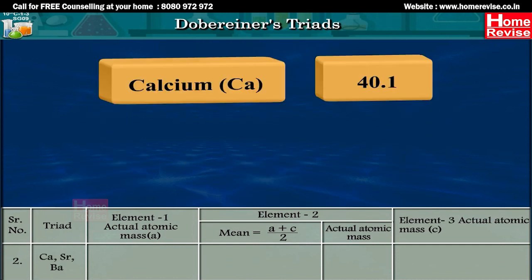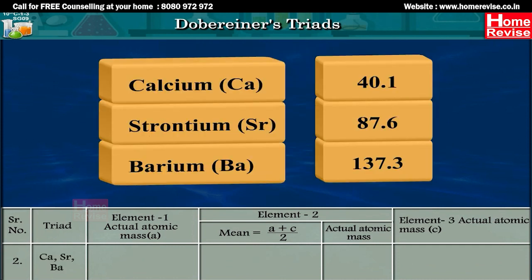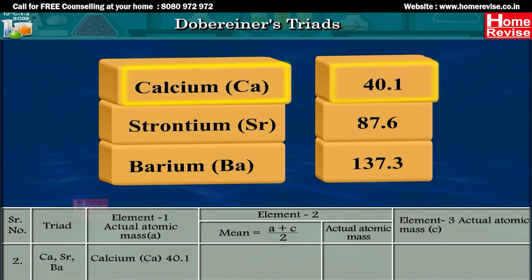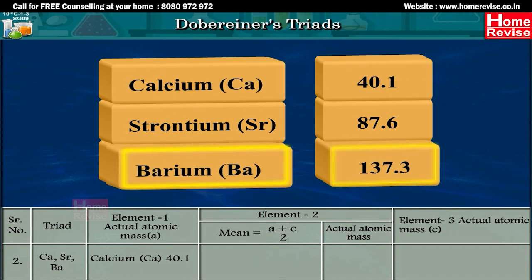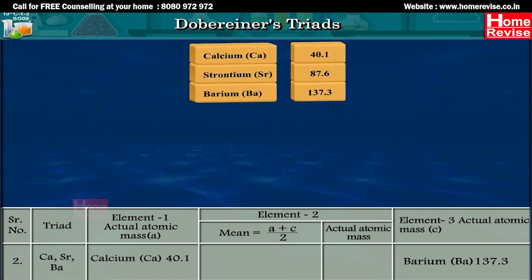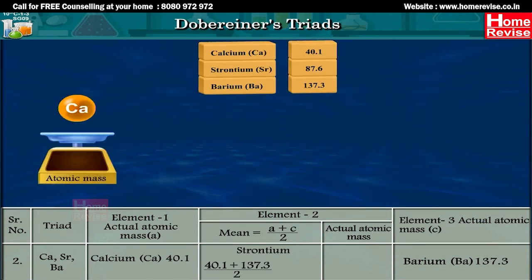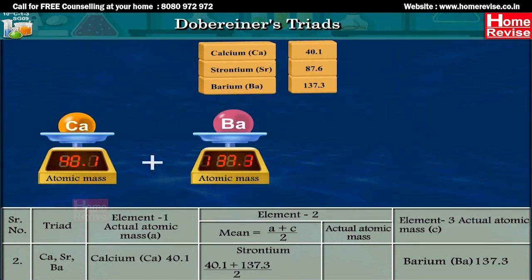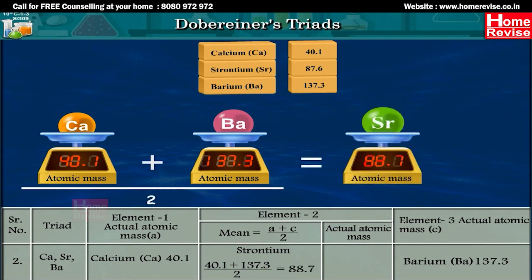In the triad calcium, strontium, and barium, the actual atomic mass of calcium is 40.1, and the actual atomic mass of barium is 137.3. The mean atomic mass of strontium is (40.1 + 137.3) / 2, that is 88.7, while the actual atomic mass of strontium is 87.6.